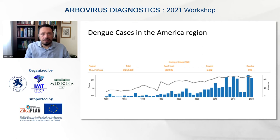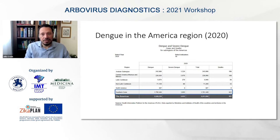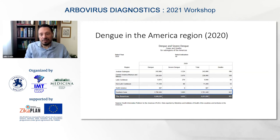According to PAHO data for the American region — the majority of which is Latin America — in 2020 there were more than 2 million confirmed cases, more than 1 million suspected cases, more than 5,000 severe cases, and close to 1,000 deaths. South America is responsible for more than half of all cases and an expressive number of severe dengue, and more than 78% of deaths occur in the South, especially Brazil.